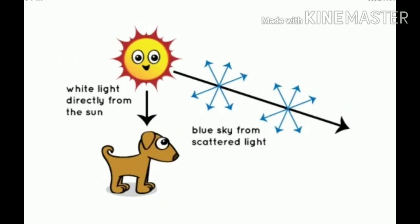Sunlight reaches Earth's atmosphere and is scattered in all directions by all the gases and particles in the air. Blue light is scattered in all directions by the tiny molecules of air in the Earth's atmosphere. Blue is scattered more than the other colors because it travels as shorter, smaller waves. This is why we see a blue sky most of the time.